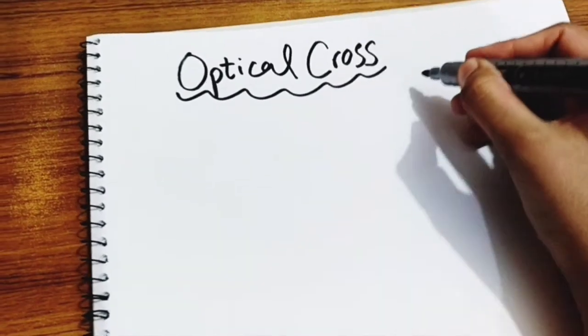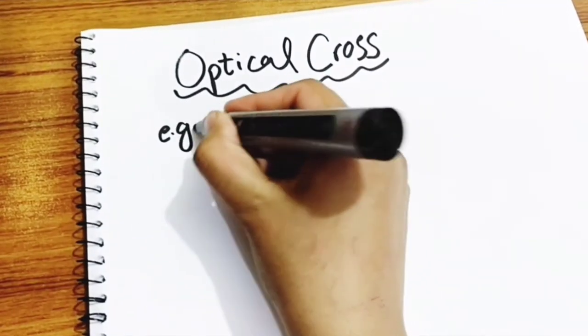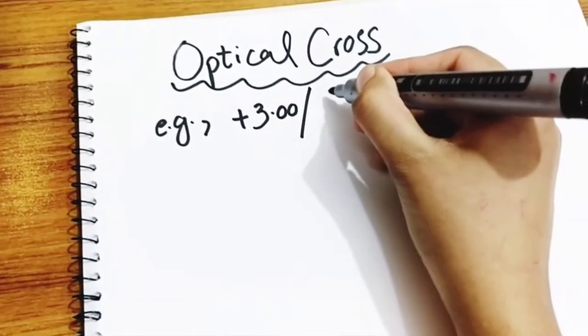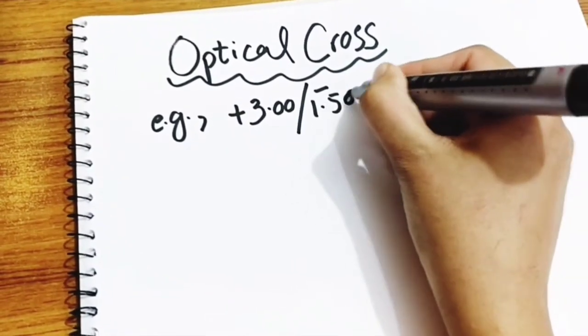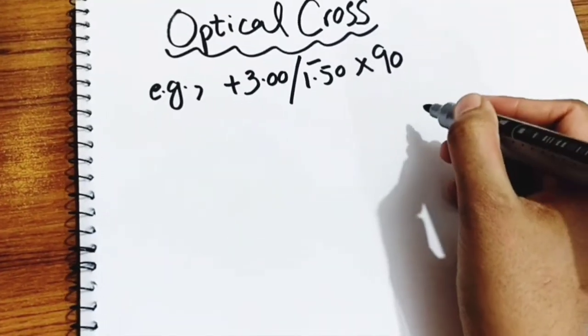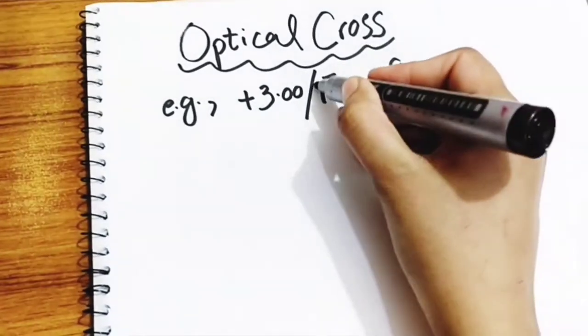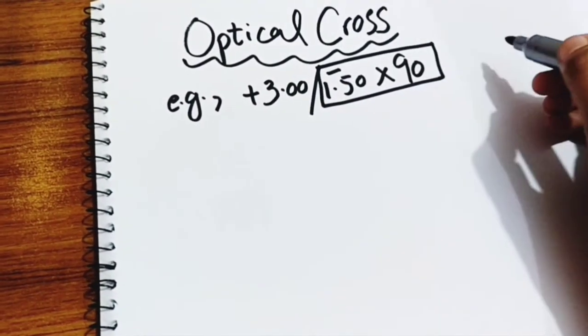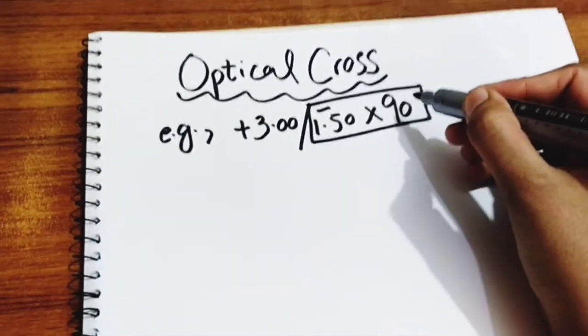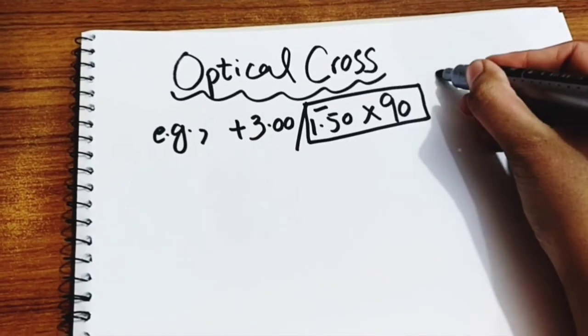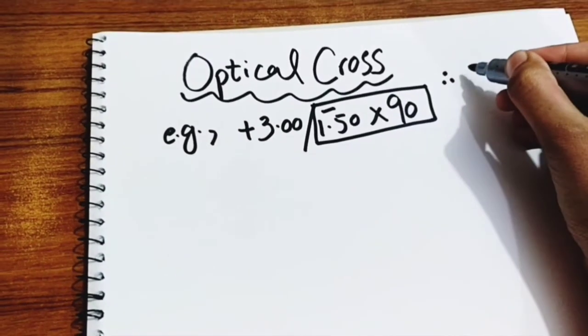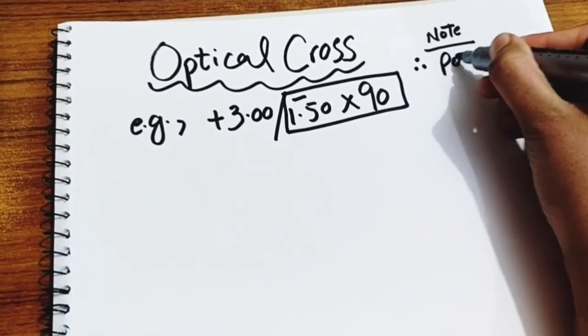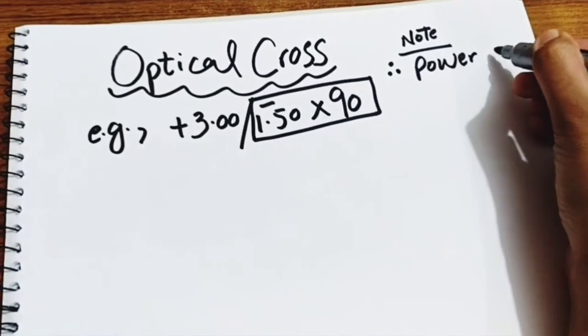It shows power and axis. Now I will explain with an example: +3.00 sphere -1.50 cylinder axis 90. As we know, power of cylinder is perpendicular to axis.